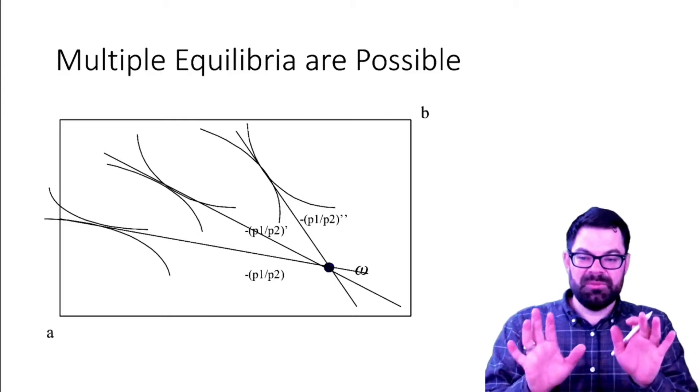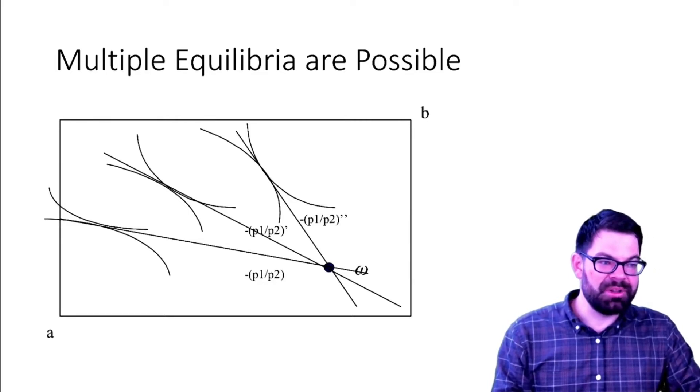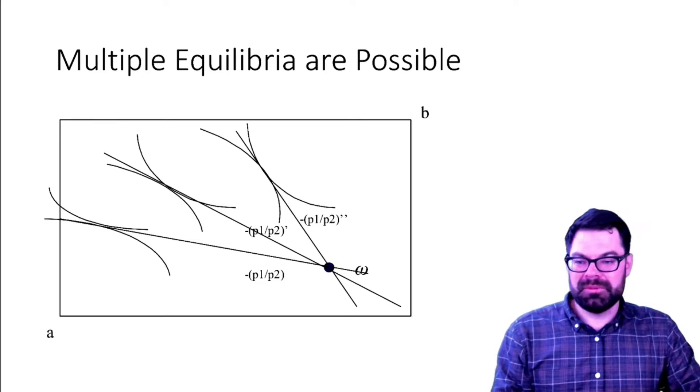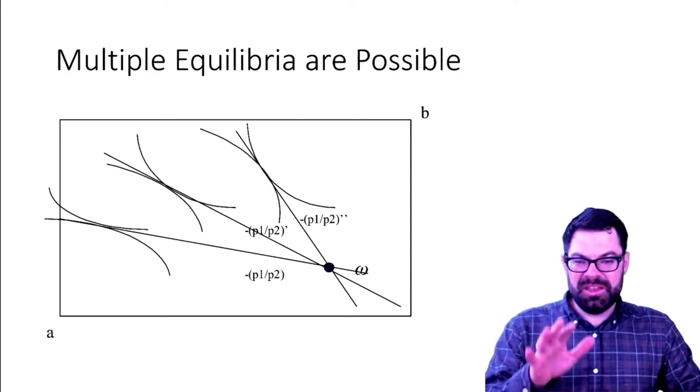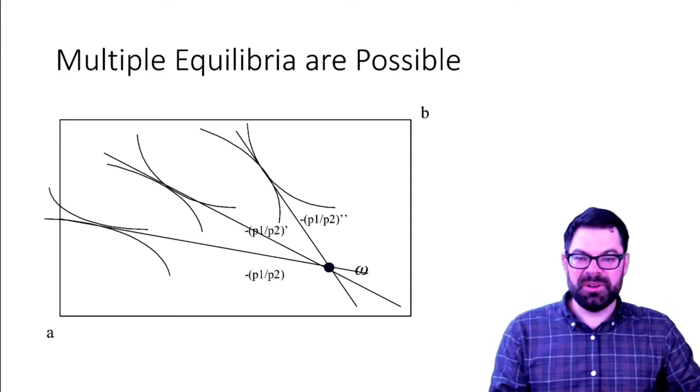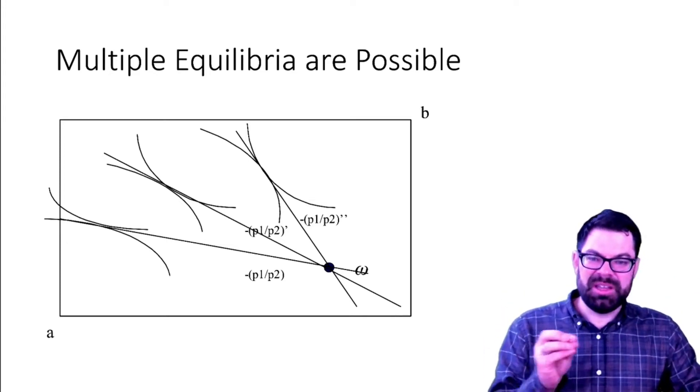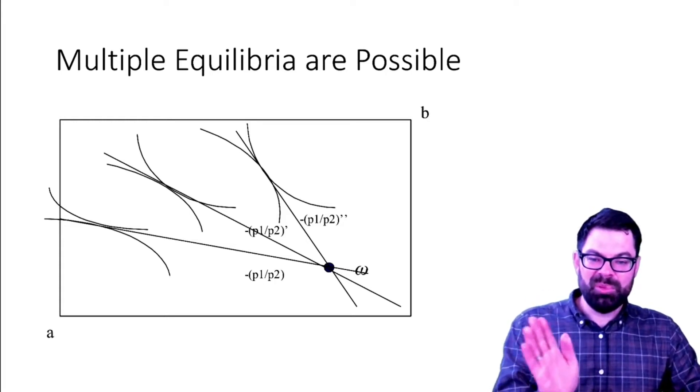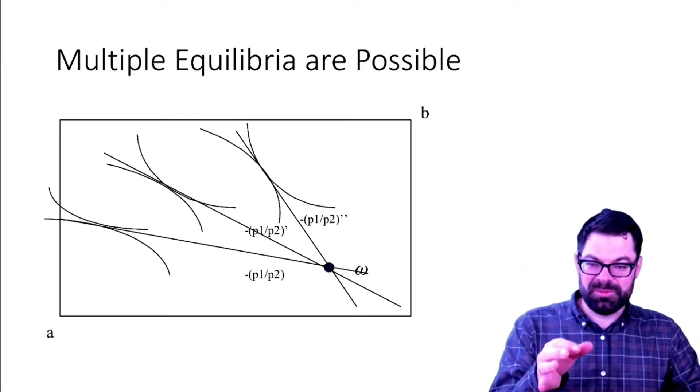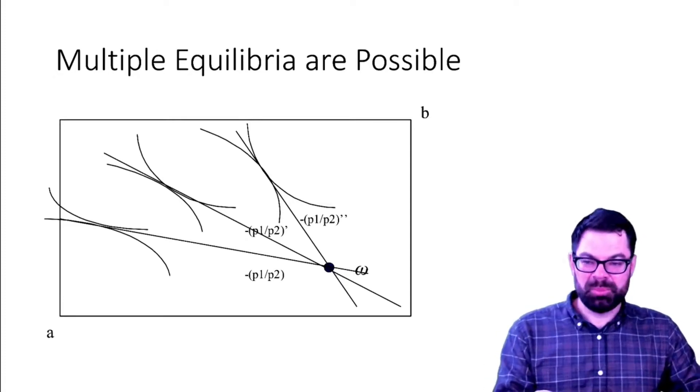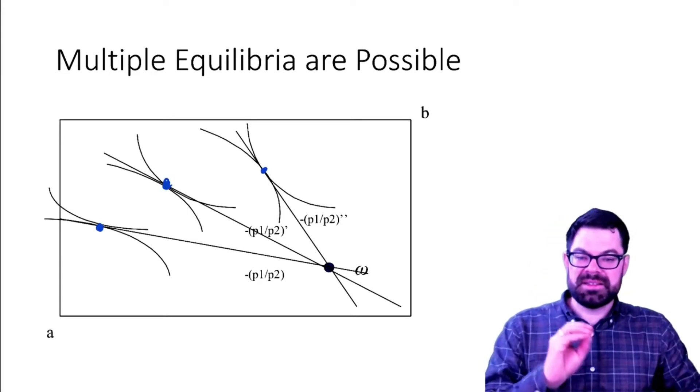And here is just a word of warning and maybe an outlook to what a lot of economists are struggling with. One of the things is the following: in many cases, even if you assume that utility functions are what we call well-behaved, you can actually get to multiple equilibria. You can find multiple price vectors—so how much is the price of good one and of good two, that's called the price vector—you can find multiple price vectors for which the indifference curves have the same slope as the budget constraint.